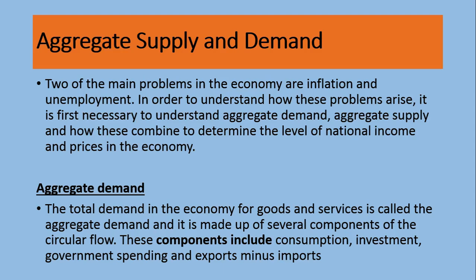Since we are talking about macroeconomic variables, here we will discuss aggregate demand and aggregate supply. Macroeconomics deals with aggregates — totals. The two main problems in the economy are inflation and unemployment. These are tricky because they are opposite to each other: when the government tries to control inflation it may lead to unemployment, and when it tries to control unemployment it may lead to inflation. Almost all economies face these problems.